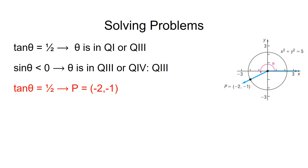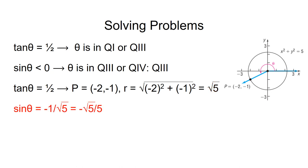Since theta is in quadrant 3 and tangent theta equals 1/2, we can say that theta corresponds to the point P equals (minus 2, minus 1). This point is on the circumference of the circle, and we can find the radius of the circle by squaring negative 2, the x-coordinate, adding it to the square of minus 1, the y-coordinate, and then taking the square root of the sum. When we do this, we get that r is equal to the square root of 5. Now we know x, y, and r, and we can use them to find all of the trig functions of theta that we don't already know.